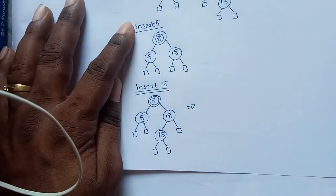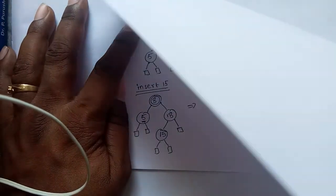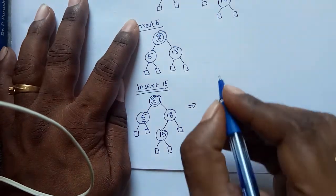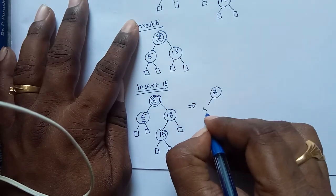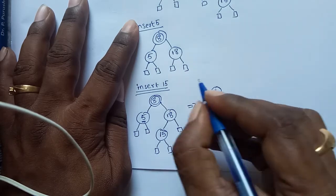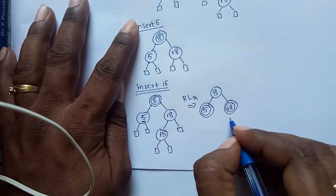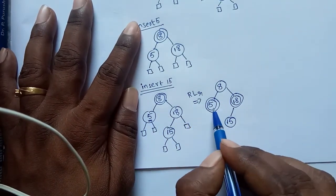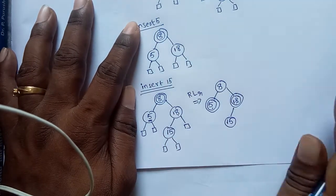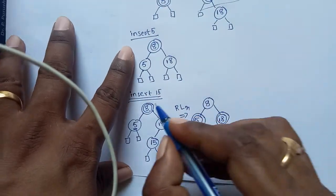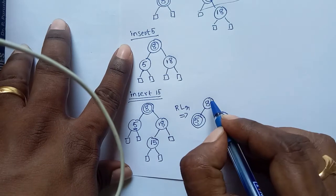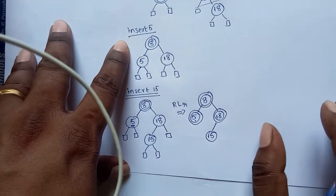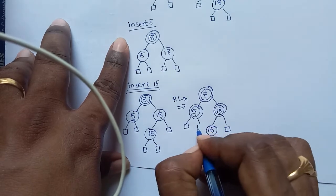If the uncle node is colored red, we simply perform a recolor operation. In the recolor operation, we change the color of the parents and their grandparent. The parent colors — 5 and 18 — are red and converted into black, and the grandparent 8 is black converted into red. Since 8 is the root node, the root must always be black, so 8 is converted back into black color.